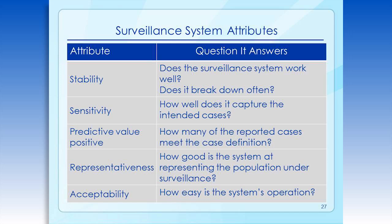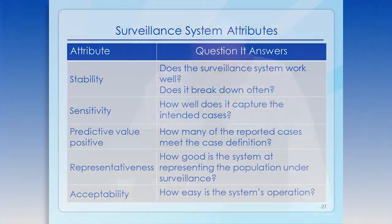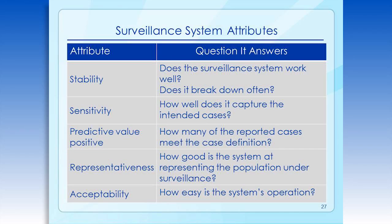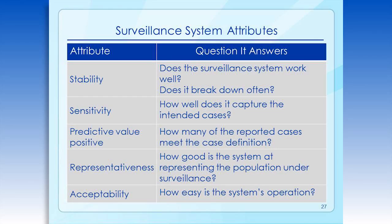The next attribute is stability — does the system work well? Does it break down very often? Things like staff turnover in key reporting sources can cause problems as much as crashes in the computer system. Sensitivity considers how well the system captures the intended cases. Does it capture only 10% of the cases or does it capture 80%? Closely related to sensitivity is predictive value positive — how many of the reported cases are true cases that actually meet the case definition.